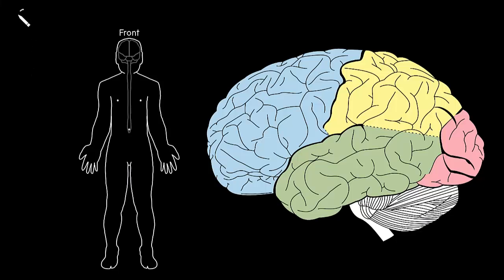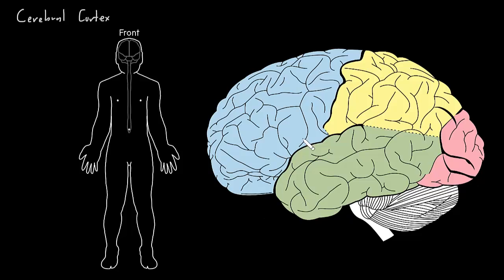In this video, I'm going to talk about the cerebral cortex — the layer of gray matter on the outside of the cerebrum. Here we're looking at a brain from the left side. This is all gray matter cortex on the outside of the cerebrum. Down here is the cerebellum, and here is the brain stem.